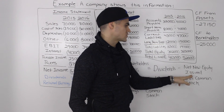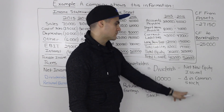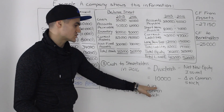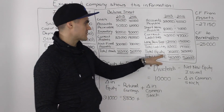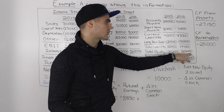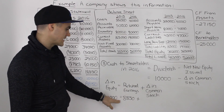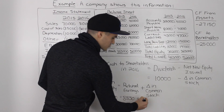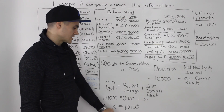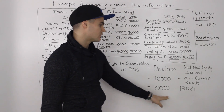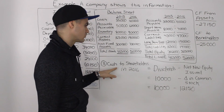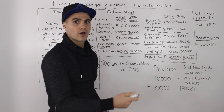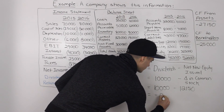Another phrase for net new equity issued is change in common stock. We can find it because the change in equity equals retained earnings for the year plus the change in common stock. The change in equity from the balance sheet is $323,000 minus $302,000, which is $21,000. That equals retained earnings of $8,850 plus the change in common stock, which we solve for as $12,150. So in the cash flow to shareholders formula: dividends of $10,000 minus $12,150 net new equity issued gives us a final cash flow to shareholders of negative $2,150.